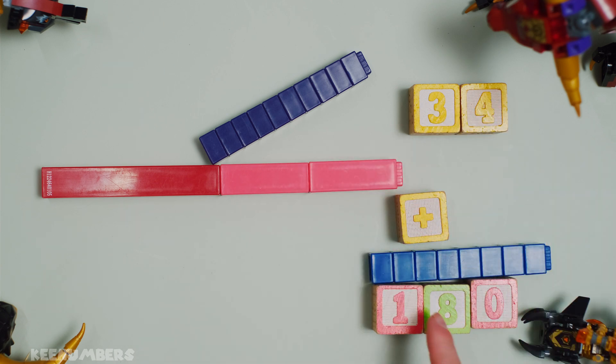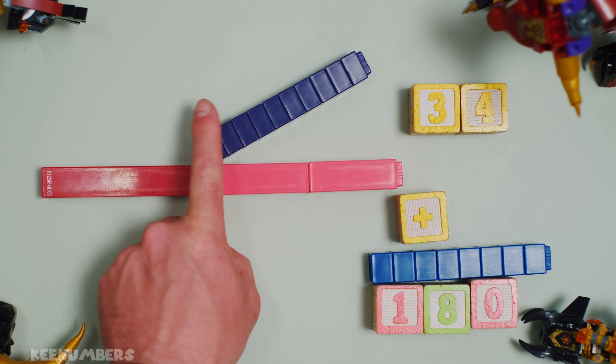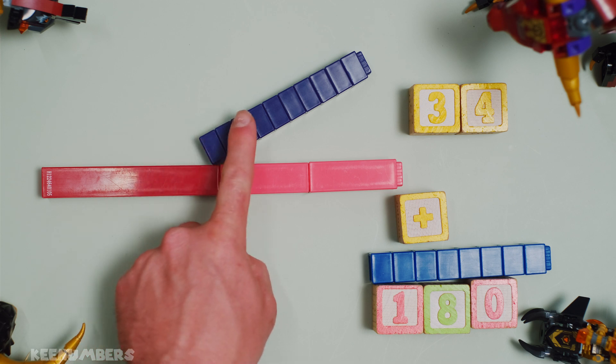One number plus 34 gives us 180. If this is 34 degrees, we're asking for this obtuse angle here. It's obtuse because it's greater than 90 degrees, but it's less than 180 degrees.